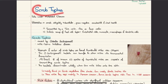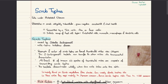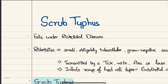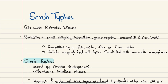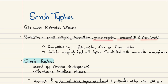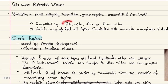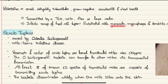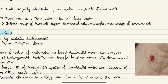Hello everyone. This video is about scrub typhus, sourced from Harrison's Internal Medicine. Scrub typhus falls under the category of rickettsial diseases caused by bacteria of the genus Rickettsia — small, obligately intracellular, gram-negative coccobacilli and short bacilli. They are usually transmitted by bites from ticks, mites, fleas, and louse vectors, and infect a range of host cell types including endothelial cells, monocytes, macrophages, and dendritic cells.